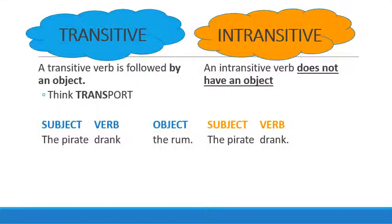Firstly, we talk about a transitive and an intransitive verb. A transitive verb is followed by an object. A way to remember this: trans sounds like transport, so it's almost as if the verb is transporting or doing something to the object. We then have an intransitive verb, which does not have an object. For the transitive verb, we have 'the pirate drank the rum.' For the intransitive verb, we have 'the pirate drank.' We don't know what was drunk, but we just know that he or she drank.